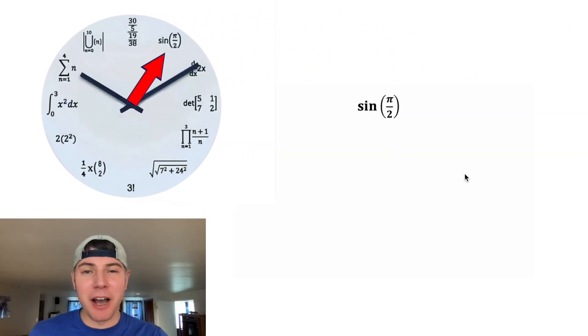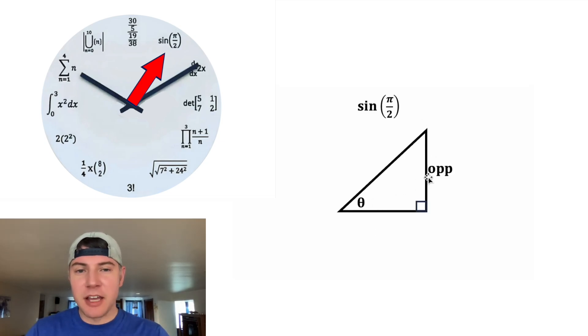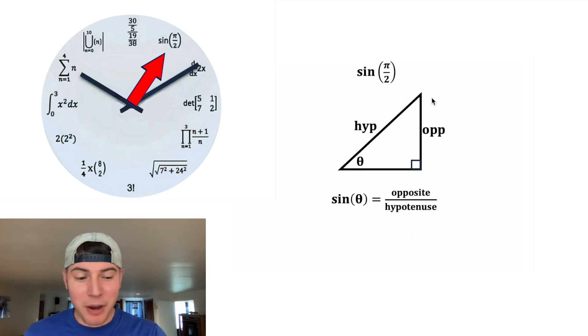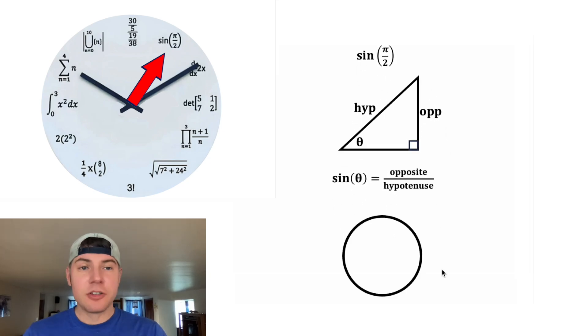So the first expression is sine of pi over two. If we have a right triangle and we name one of the angles theta, the side opposite theta we'll call opposite and the side opposite the right angle we'll call hypotenuse. The sine of that angle theta is equal to the opposite divided by the hypotenuse. So this is what sine means. Now let's deal with this pi over two. Let's look at a circle.